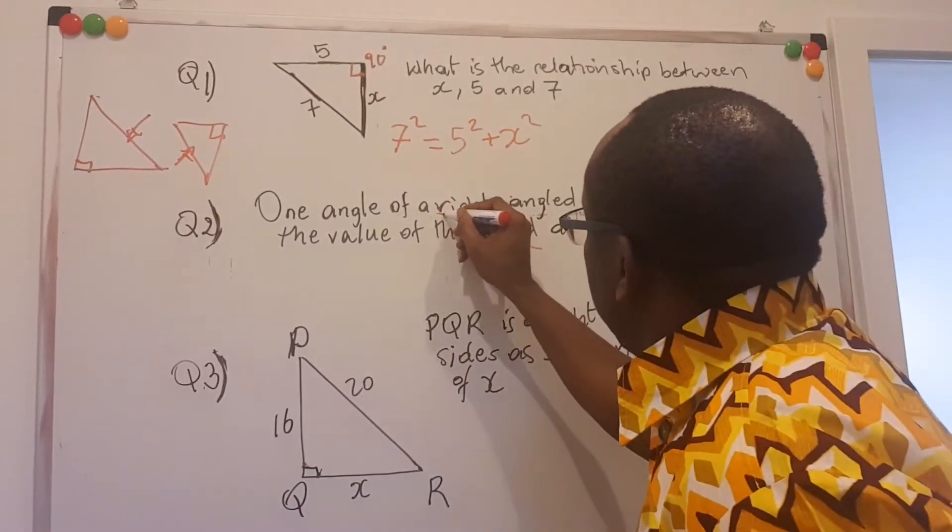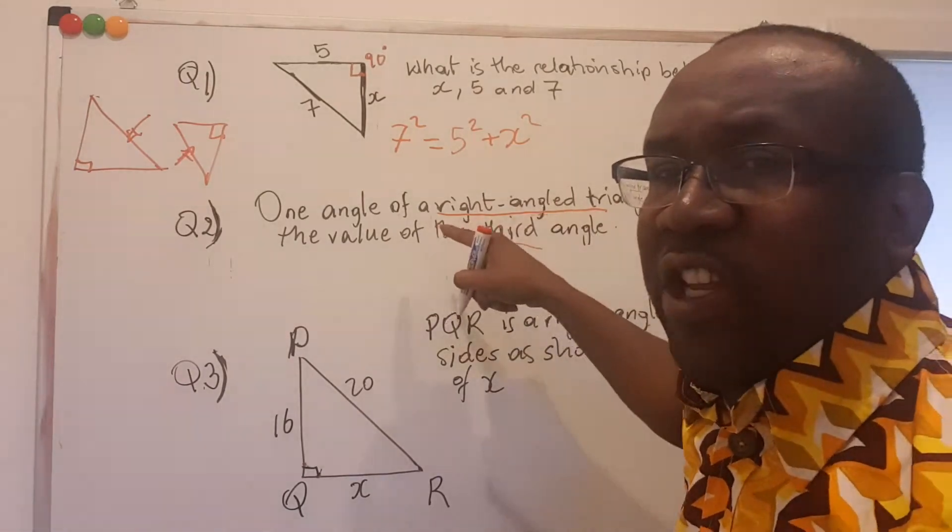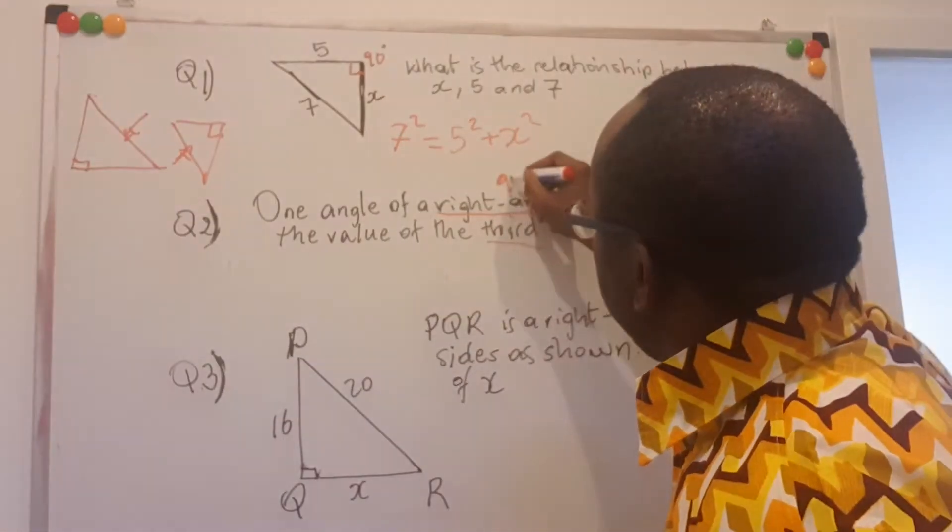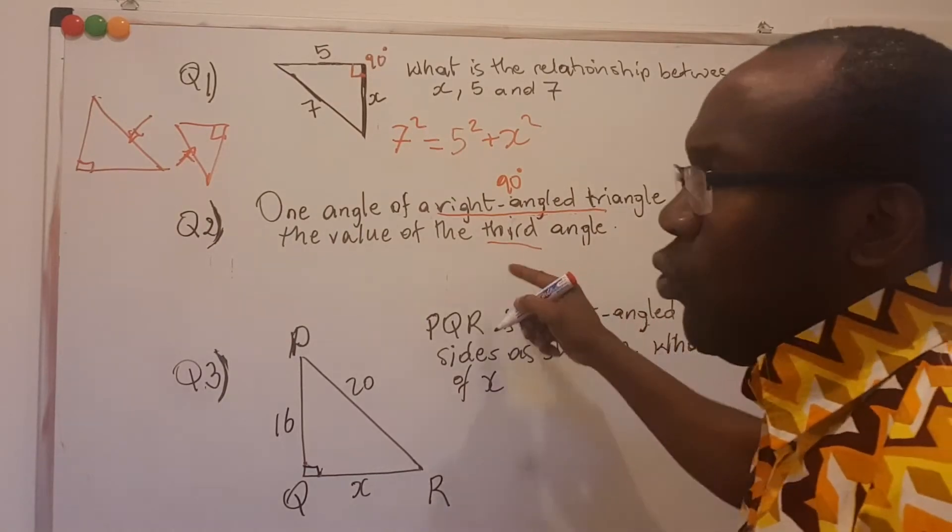The first is that this is a right angle triangle. Therefore, there's already information given here about one of the angles, and that is 90 degrees. And this one is 55. So we are left to look for the third.